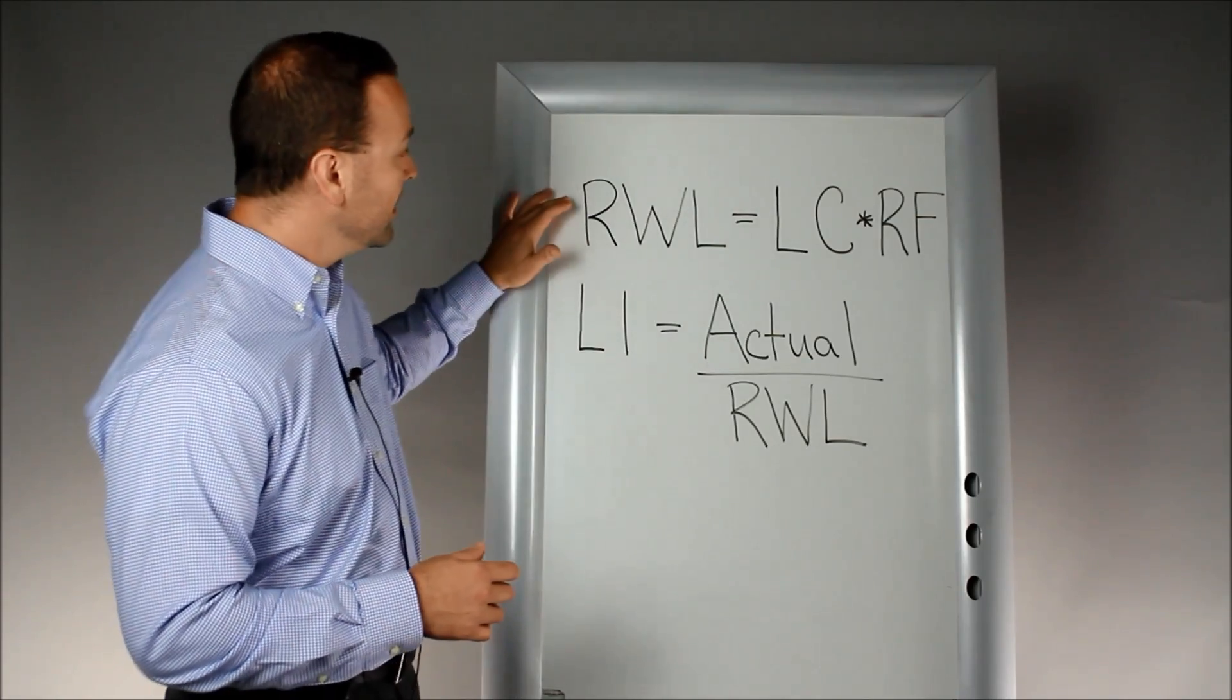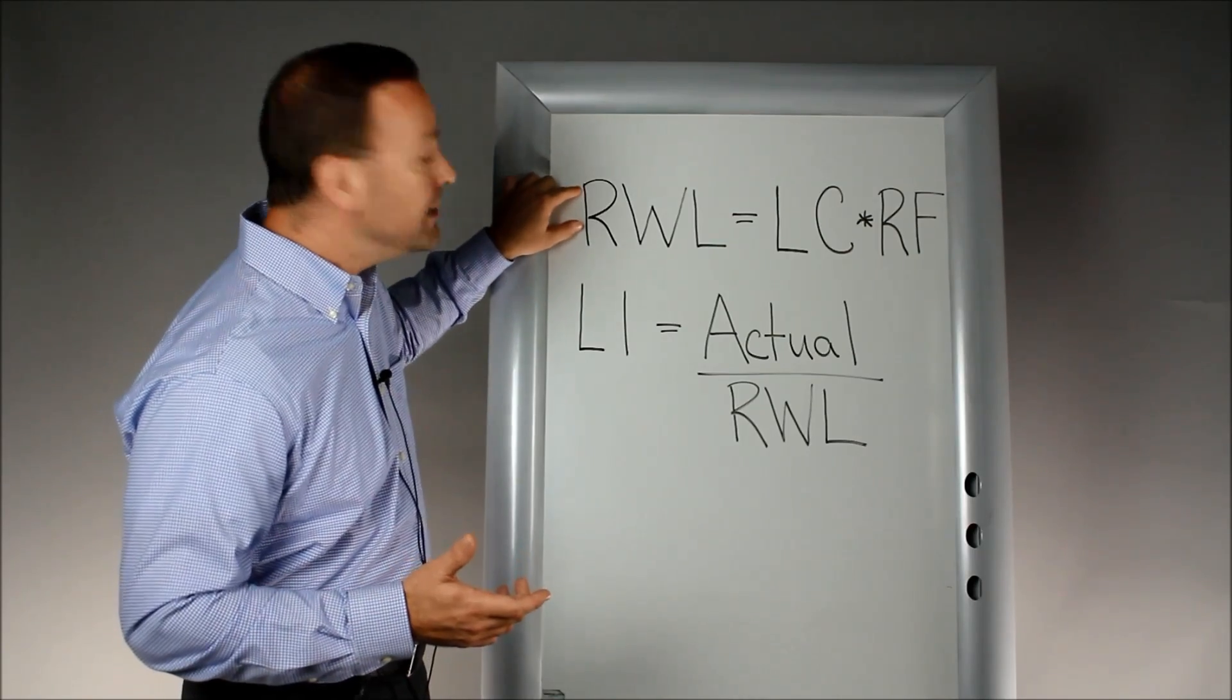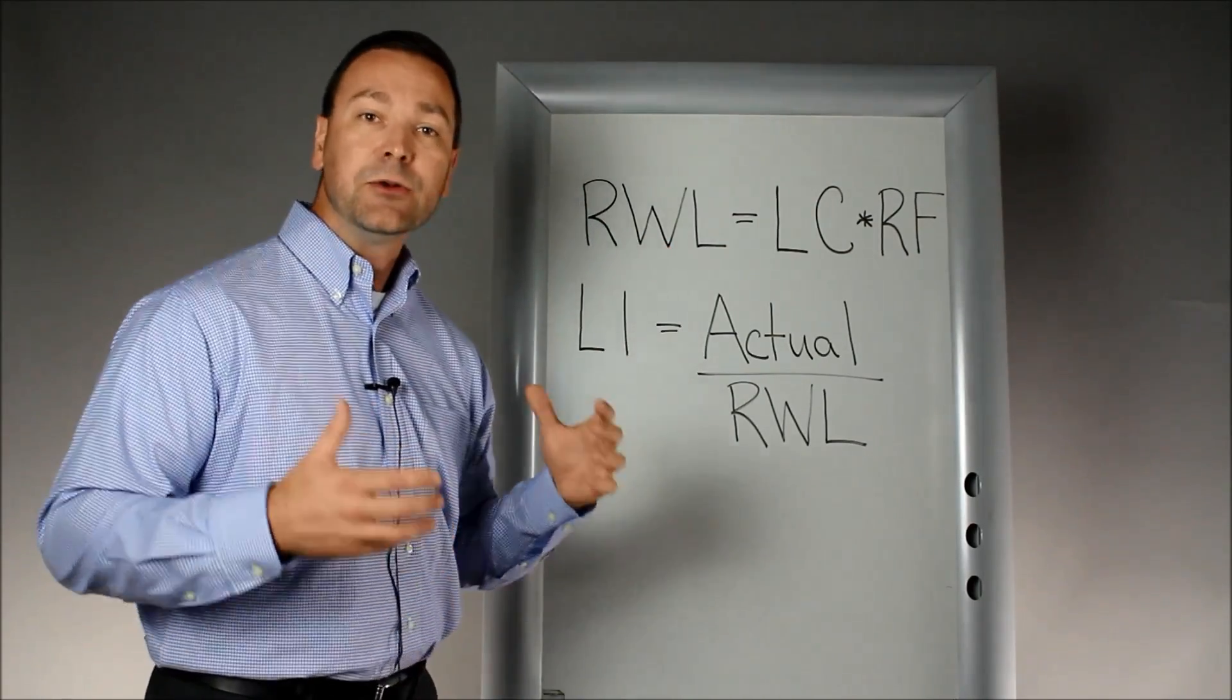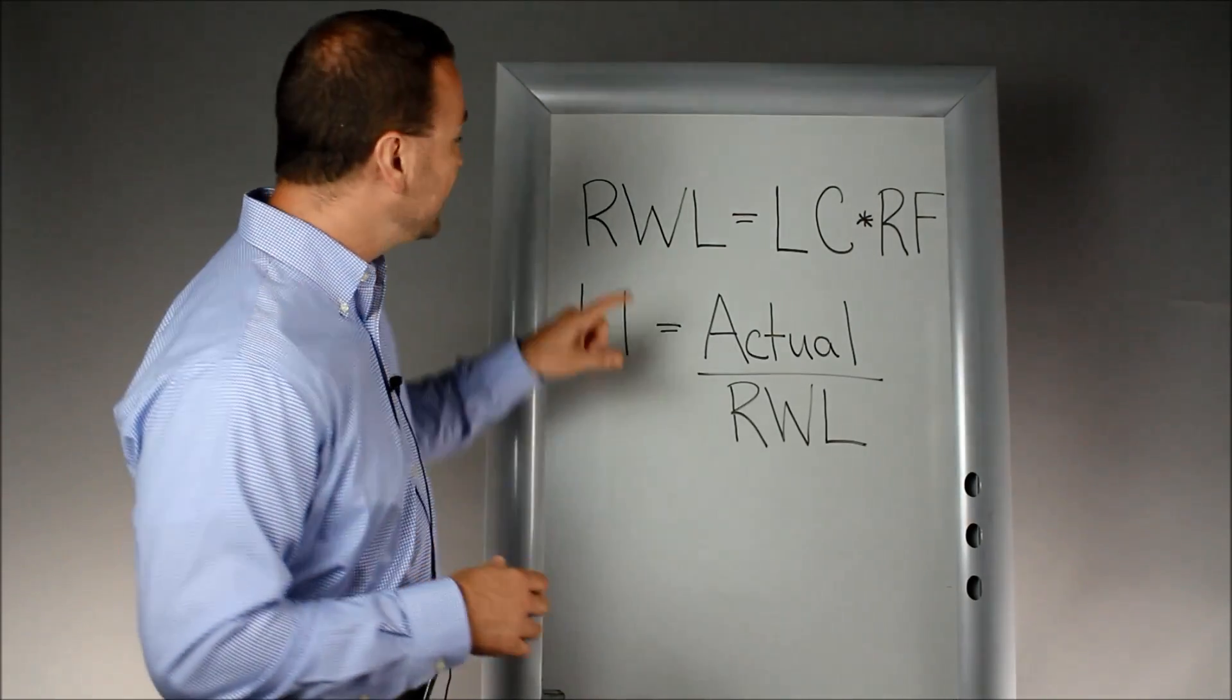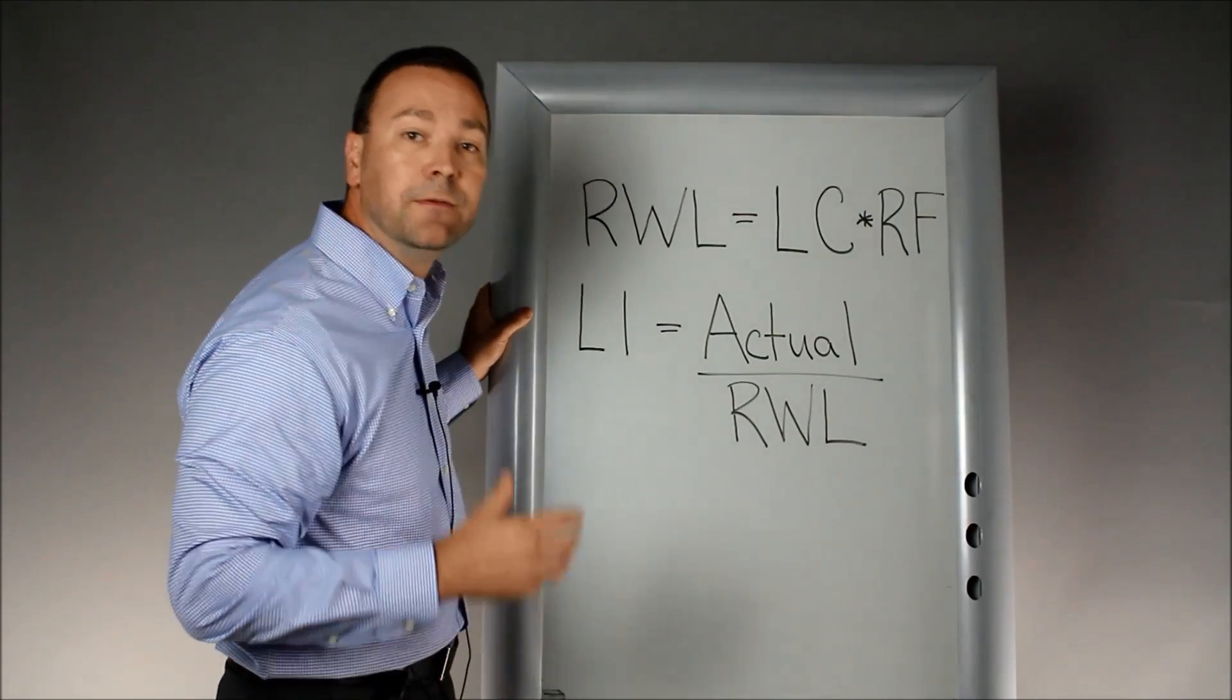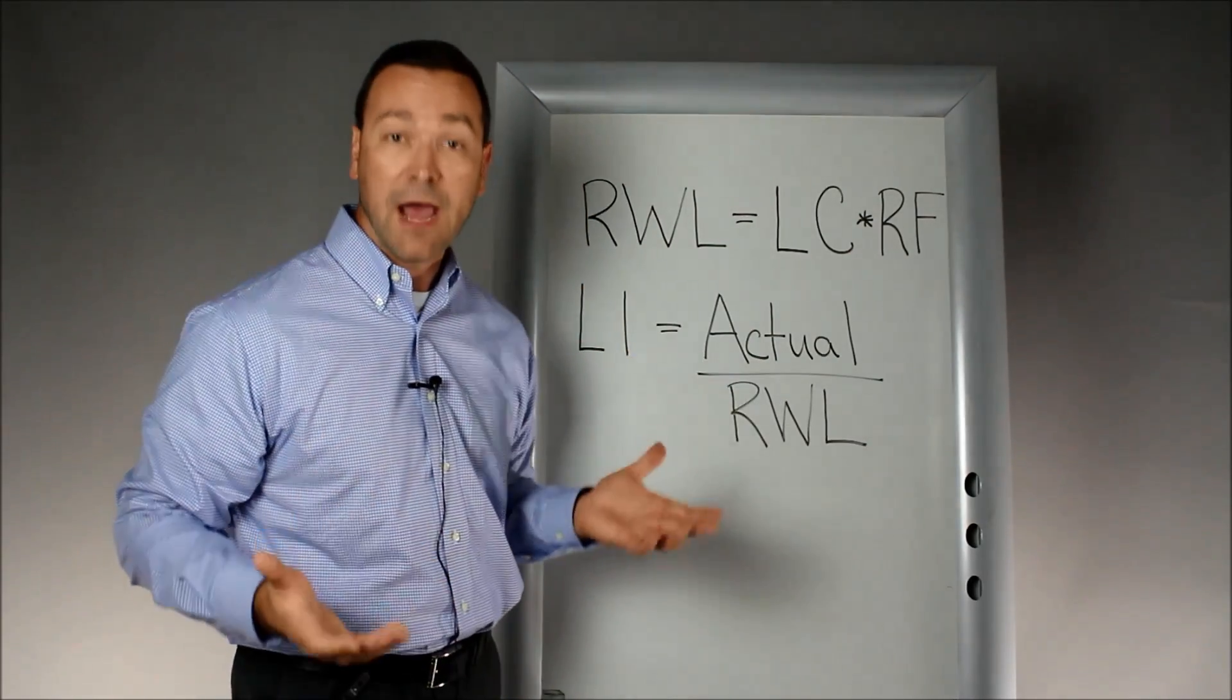Up on the top here, we have the first equation in the NIOSH lifting equation. It is trying to determine what's called the recommended weight limit for a particular lifting task, for a particular lifting geometry. It is calculated by multiplying a load constant, which is equal to 51 pounds, by a series of modifiers or risk factors.